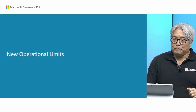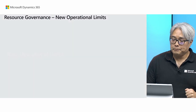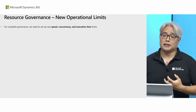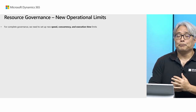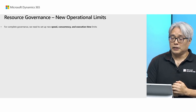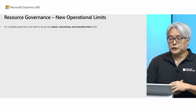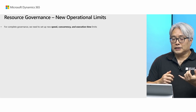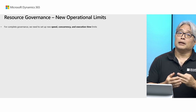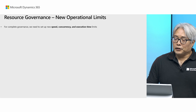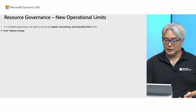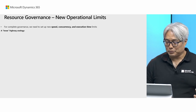Let's talk about the new operational limits coming this quarter. There are three types of operational limits we can use to govern resources in the cloud. For complete governance, you need a speed limit, a concurrency limit, and an execution time limit. I'd like to use a loose analogy of highway traffic management. Imagine a stretch of highway as a limited server or host capacity — traversing that highway represents consuming a portion of that capacity, and cars in that highway represent workloads submitted by our customers and their users.